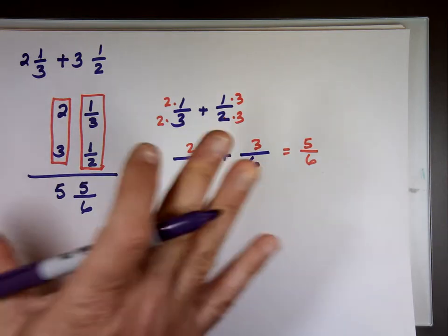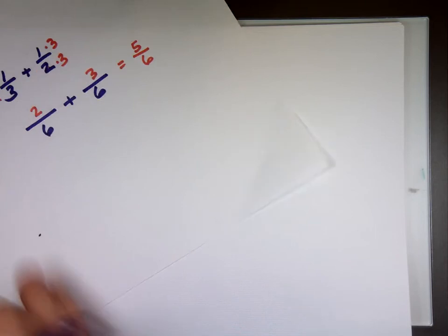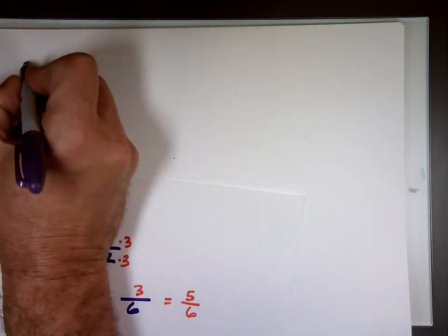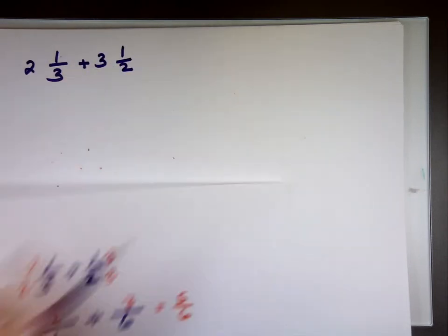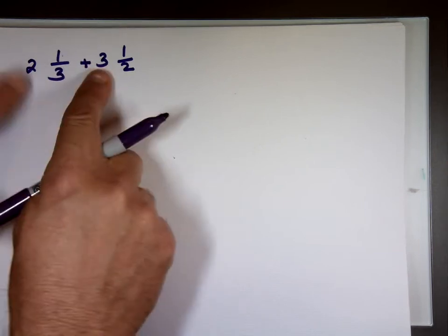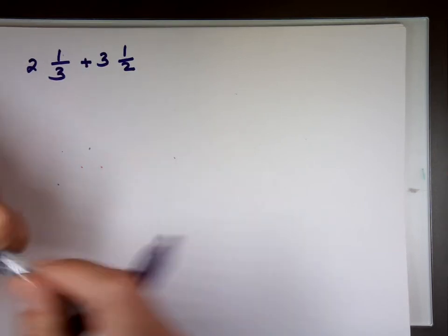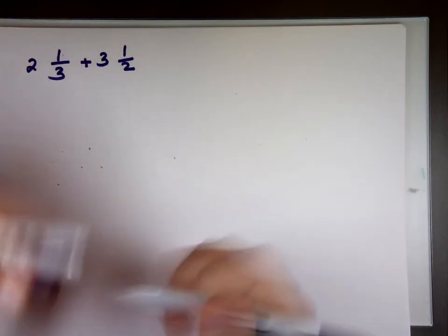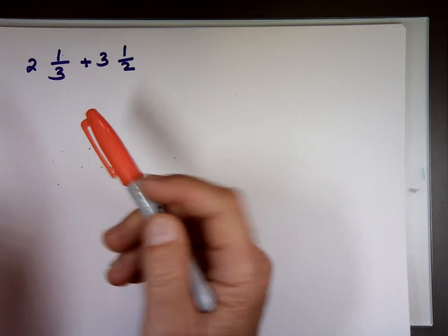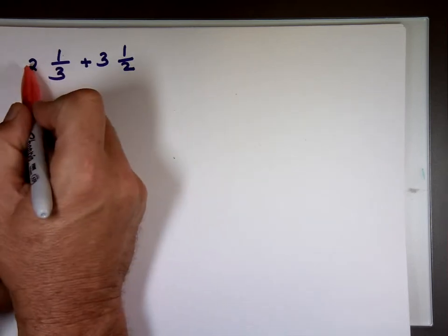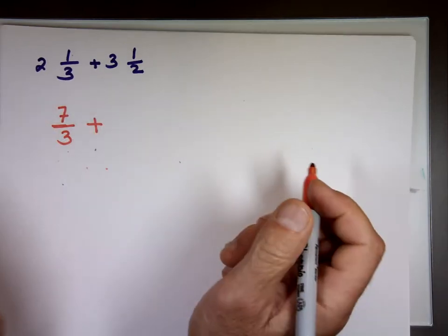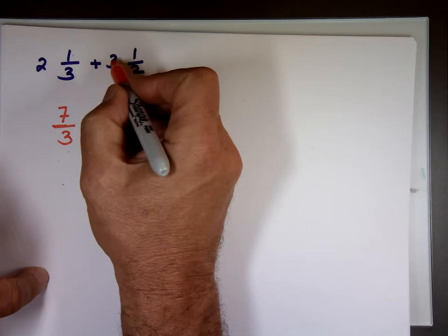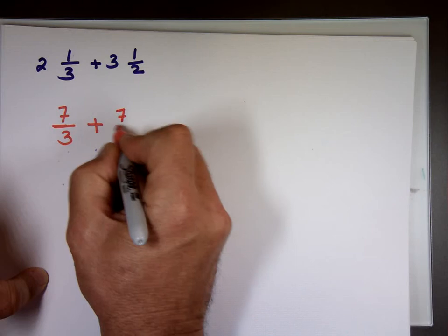I prefer a different method that works for addition, subtraction, multiplication, and division — it works all the time. Instead of adding whole numbers and fractions separately, convert both mixed numbers to improper fractions. For 2 and 1/3: 3 times 2 plus 1 equals 7 over 3. For 3 and 1/2: 2 times 3 plus 1 equals 7 over 2.